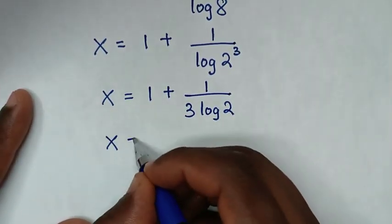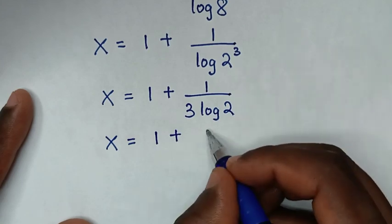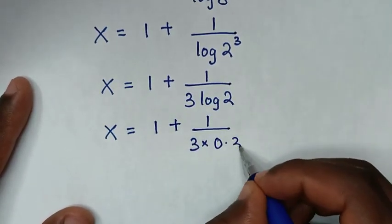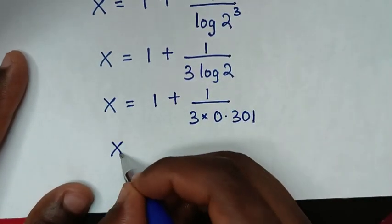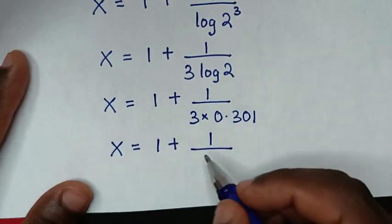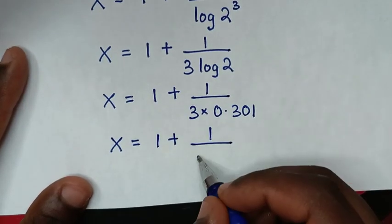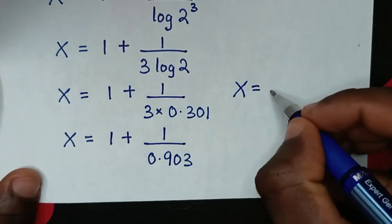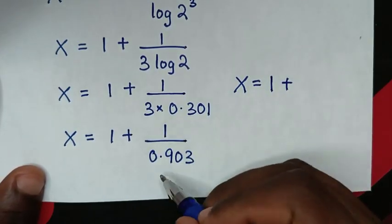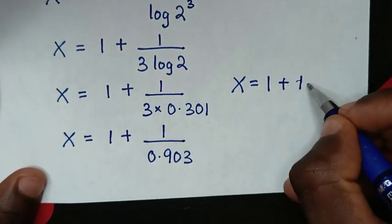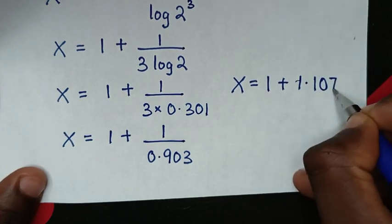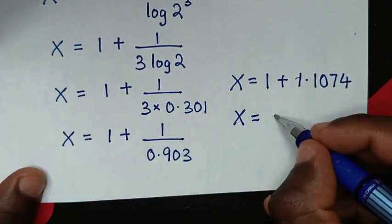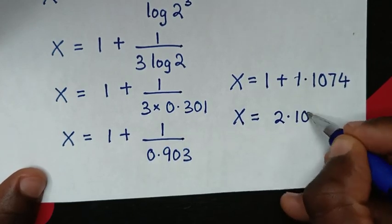Then, in the next step, it will be x is equal to 1 plus 1 over 3 times log of 2, which is 0.301. Then it will be x is equal to 1 plus 1 over 3 times 0.301, which is 0.903. Then it will be x is equal to 1 plus 1 divided by 0.903, which is 1.1074. So it will be x is equal to 1 plus 1.1074, which is 2.1074.